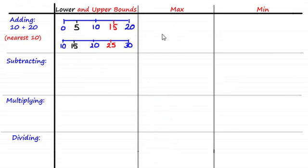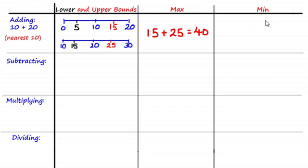To get the maximum when adding two numbers, you simply add the two largest possible numbers — the upper bounds of 10 and 20 — which is 15 plus 25, equal to 40. To get the minimum, you add the smallest values, which are the lower bounds of 10 and 20: 5 plus 15, which equals 20.